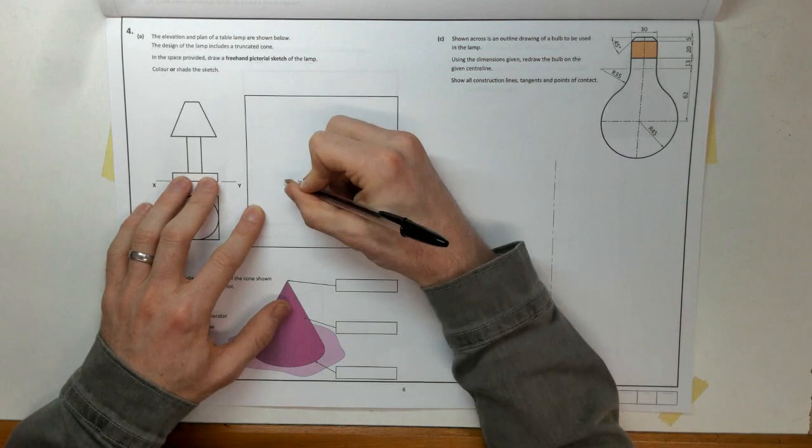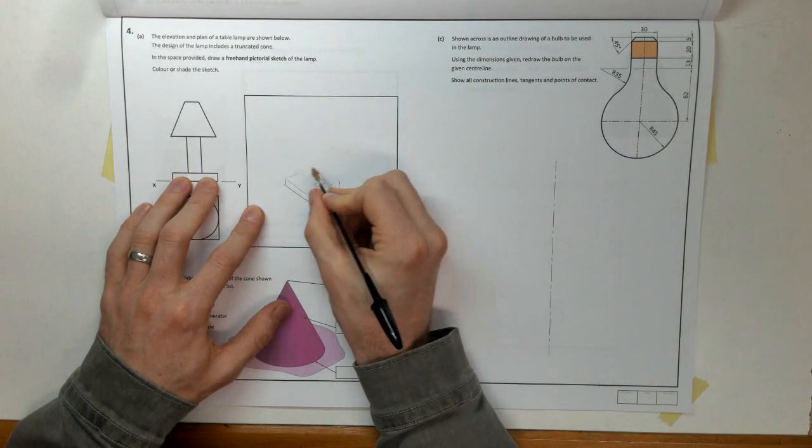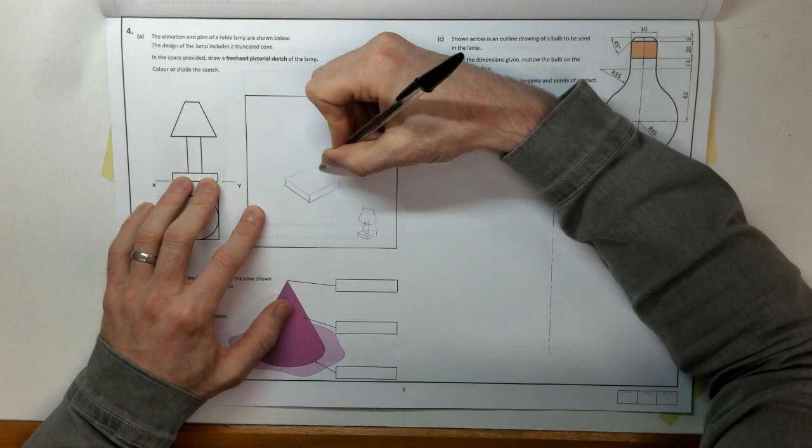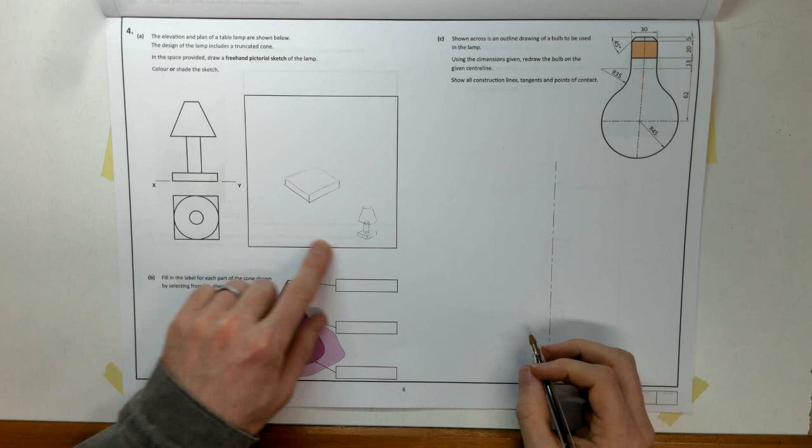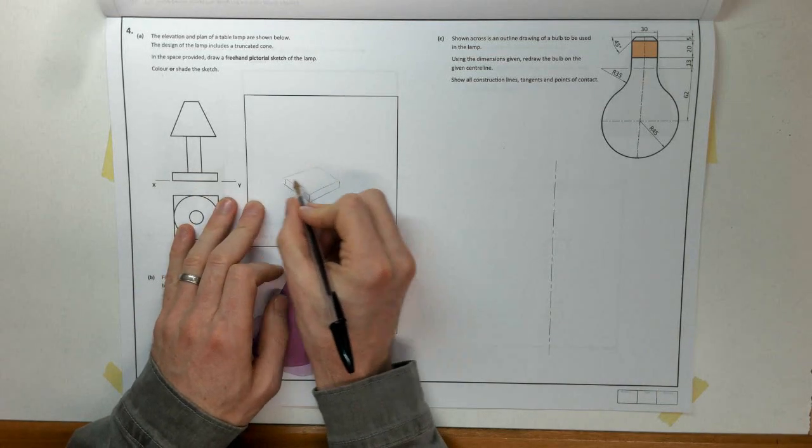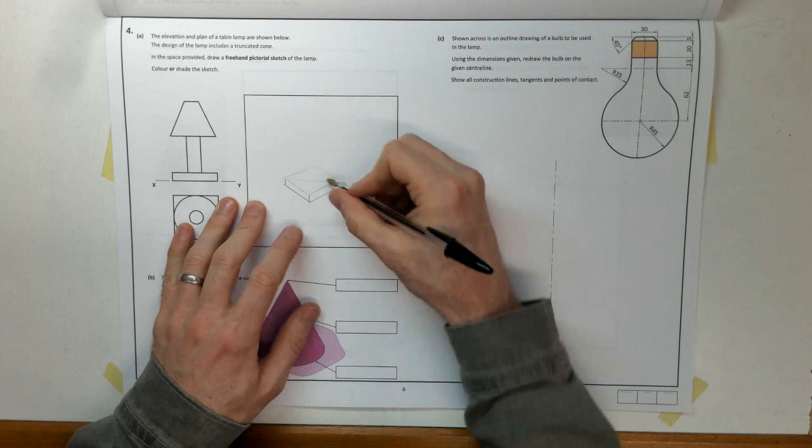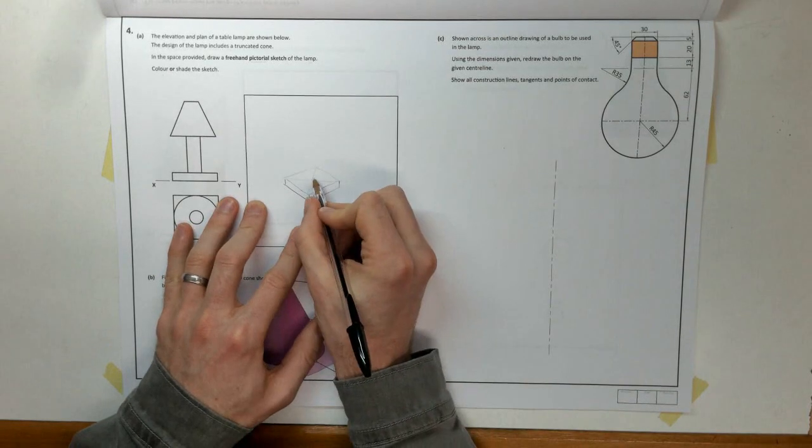Try to draw approximately the same proportions that are given. And that is approximately square. Draw it roughly, use little light lines. Then my circle or base for the cylinder will be somewhere around the middle, so I'm just going to draw a little cross there to find the middle and my circle.